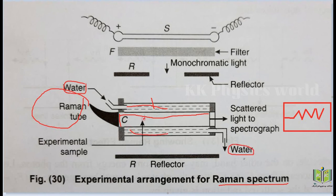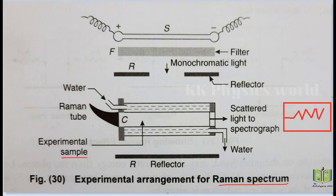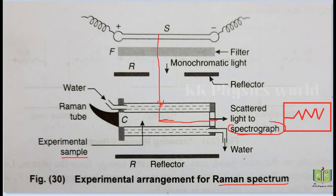The experimental sample is placed inside the Raman tube. When the sample is placed in the Raman tube, signals are sent to the spectrograph. Light from the source passes through the filter and reflector and falls directly on the Raman tube, then passes through the flat glass end to the spectrograph, where we observe the difference between the incident beam of light and the scattered beam of light.